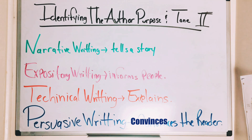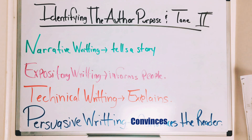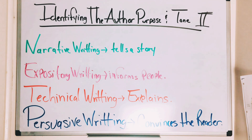Expository writing informs people — like a newspaper, magazine, or encyclopedia. Technical writing explains — like a manual for a new device. Persuasive writing convinces the reader — like an opinion column, a blog, or an advertisement that persuades you to buy or do something. If the writer doesn't stick to their particular form of writing, something may be off. A different tone can help you identify what's wrong, and knowing what's wrong helps you know what's correct.